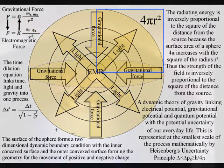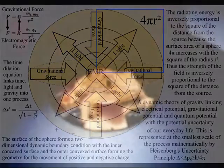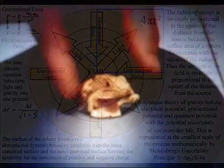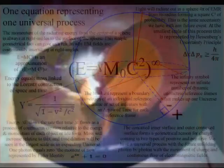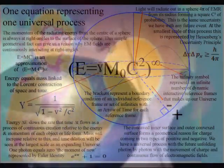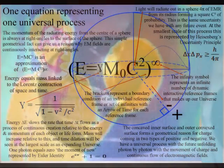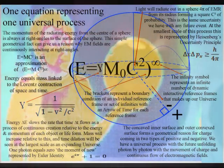The holographic principle of the information of a three-dimensional process is unfolding in the form of the two-dimensional surface of the sphere with the movement of positive and negative charge. This is represented by the brackets in the equation representing a dynamic boundary condition of an individual reference frame with an arrow of time for each reference frame.